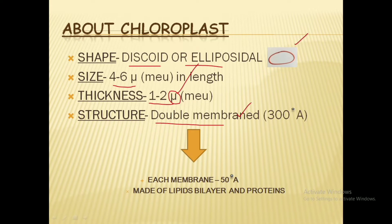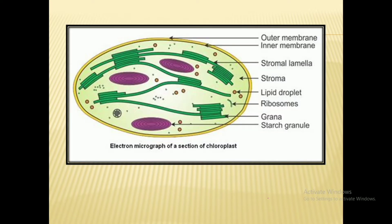We'll understand about the structure with the help of a diagram in the next slide. A point to remember is that each layer is about 50 angstroms in thickness, and it is mainly made up of the lipid bilayer and proteins.